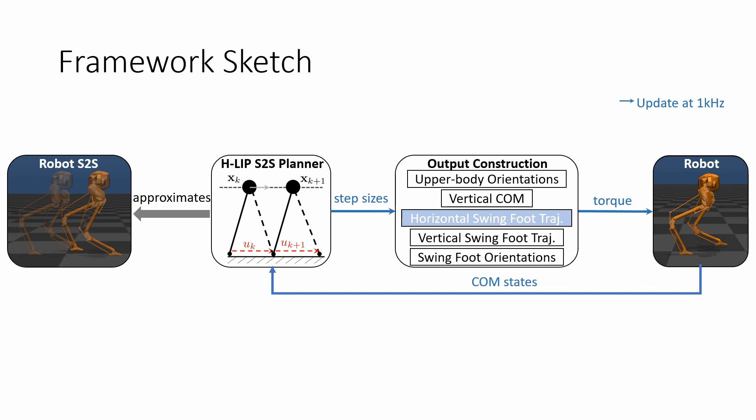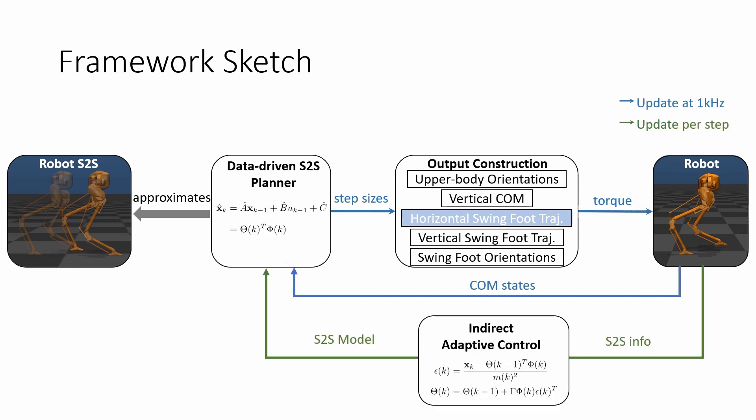The generic nature of the HLIP model leads to model mismatch that can impose limitation on performance. To mitigate this issue, we propose the incorporation of an additional adaptive control loop. This control loop dynamically updates the data-driven step-to-step dynamics for the foot placement planner, integrating real-time robot data to enhance the performance of our approach under nominal and disturbed scenarios.